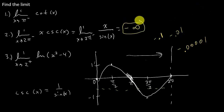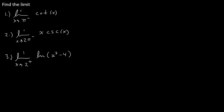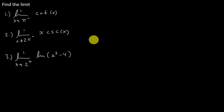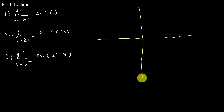There's your answer. Alright, so let's take a look at the last problem: the limit of natural log of x squared minus 4 as x approaches 2 from the right. First, you can see that if we plug 2 in, we're going to get 4 minus 4 which is 0. You can't take the log of 0 or a negative number, so remember that.